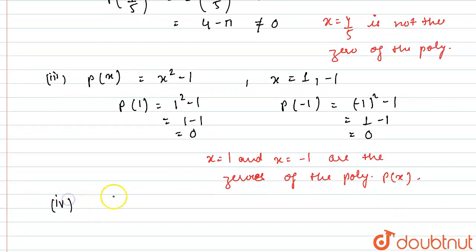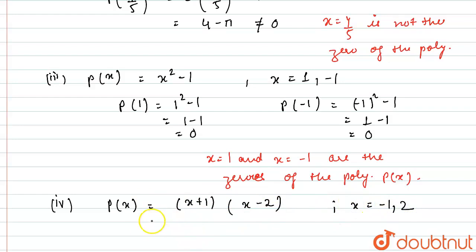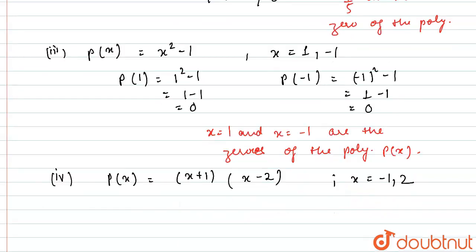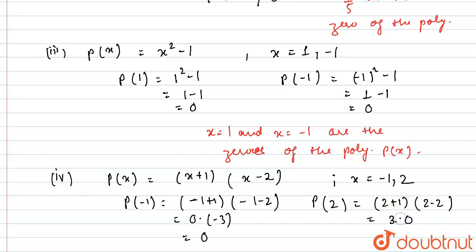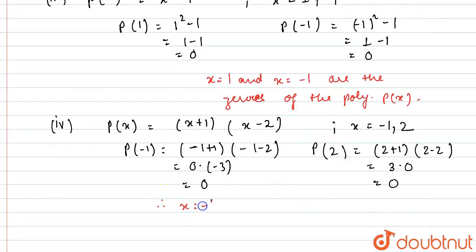In the fourth part, we are given polynomial p(x) = (x + 1)(x - 2) and we need to check this at x = -1 and x = 2. I will find p(-1): this equals (-1 + 1)(-1 - 2) = 0 × -3 = 0. Similarly, p(2) = (2 + 1)(2 - 2) = 3 × 0 = 0. So x = -1 and x = 2 are both zeros of the polynomial p(x).